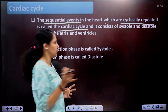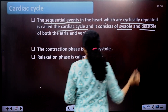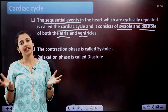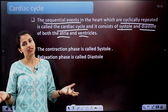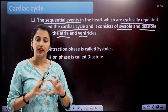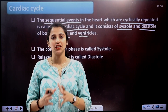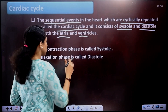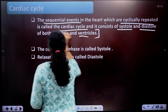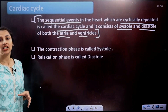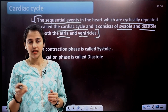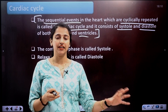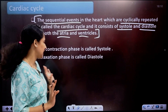Contraction is called systole and relaxation is called diastole — both in atria and ventricle. The ventricle contracts and relaxes; the atria contracts and relaxes. The cardiac cycle includes both the systole and diastole of atria and ventricle. That is the definition of cardiac cycle.